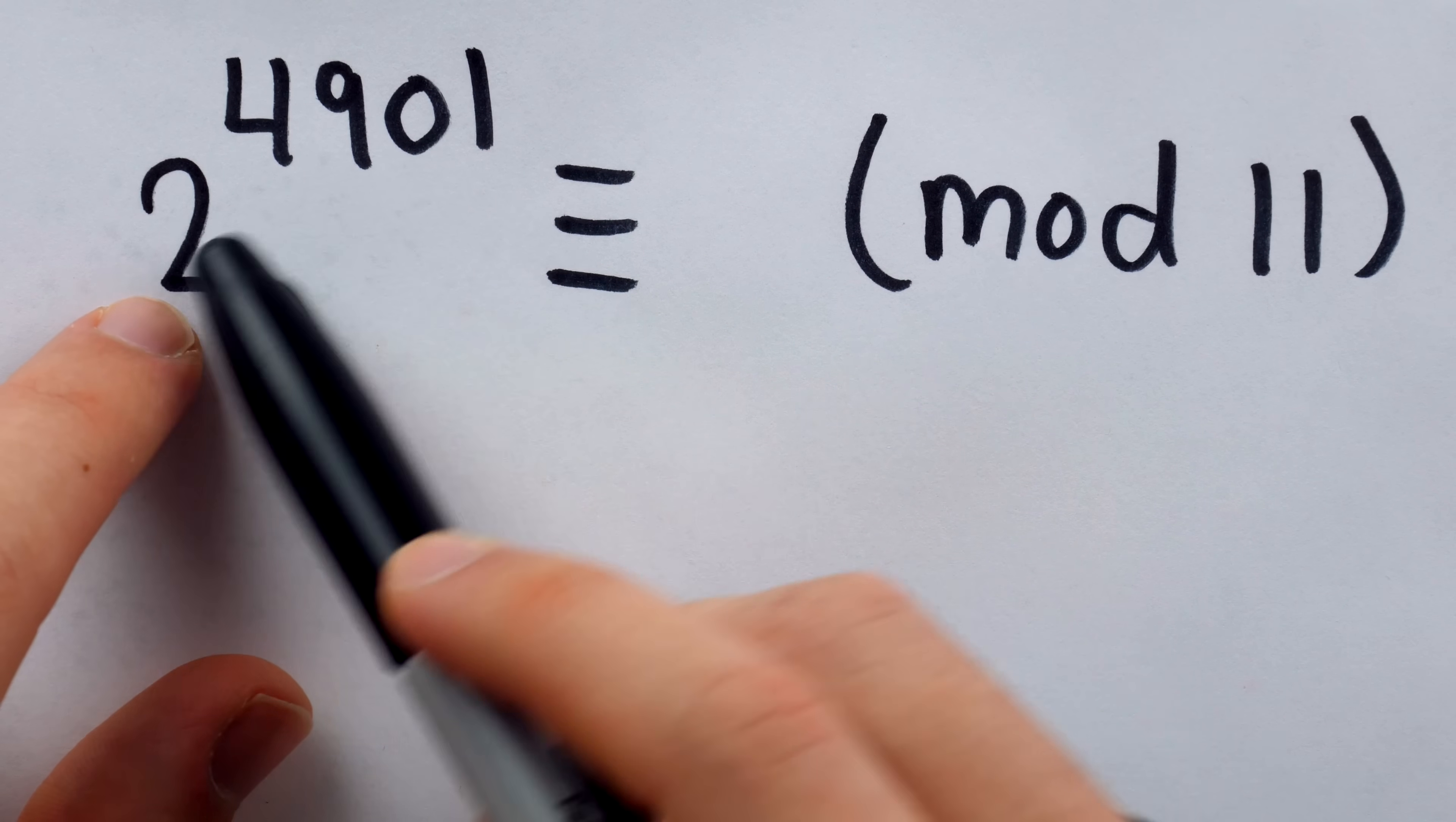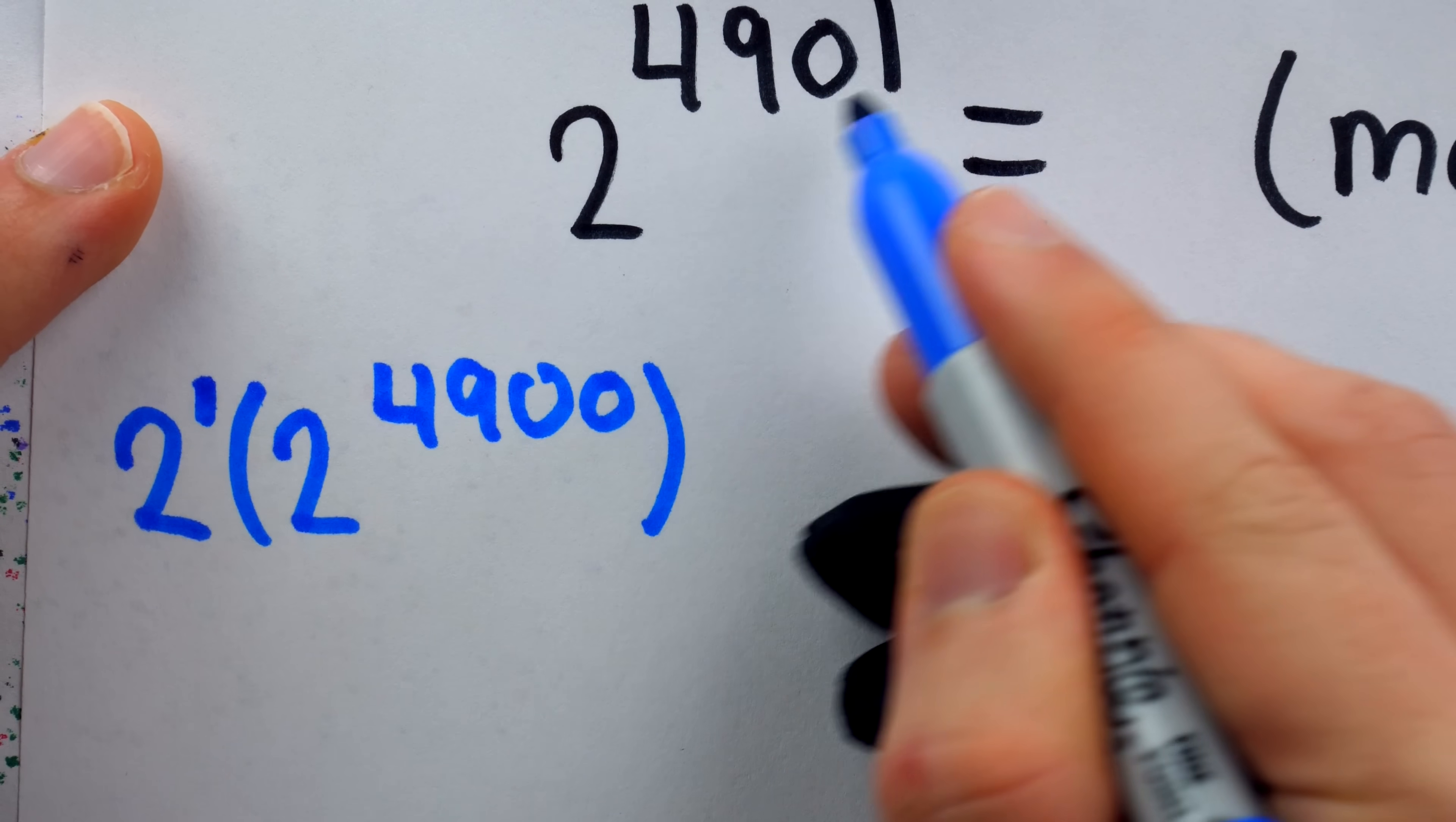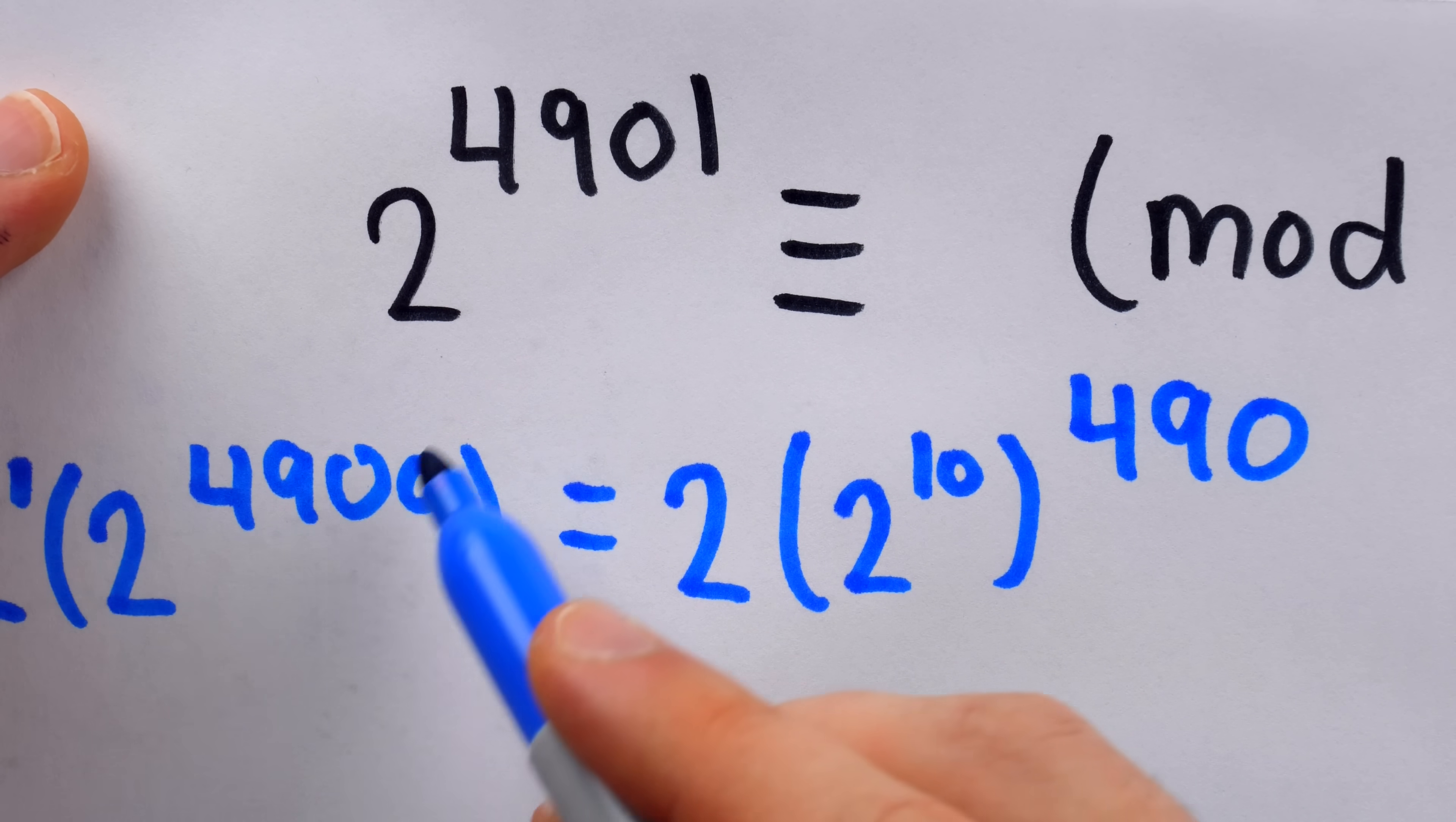What we first need to do is rewrite this expression on the left in a more manageable form. Well, thankfully, if you know your exponent rules, that won't be too difficult to do. 2 to the power of 4,901 is the same as 2 times 2 to the power of 4,900. In total, what we have here is 4,901 factors of 2. So this is the same as this. If we multiply 2 by this, we would get that. The idea is that we would just add the exponents, and so they would add back to that original exponent. Then, with more exponent rules, we can simplify this, which of course, as it stands, is still not easy to deal with. So we have 2 multiplied by 2 to the power of 10 to the power of 490. 2 to the 10 to the power of 490 can be evaluated by just multiplying those exponents together, which shows us that certainly this equality is true. 490 times 10 would give us back that exponent of 4,900.